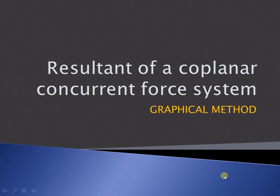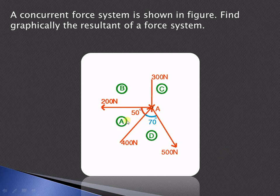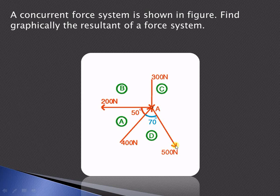Let us understand how to find out the resultant of a coplanar concurrent force system using the graphical method. Here we have a concurrent force system and we have to find out the resultant. We are having various forces: a 200 newton pull force, a 300 newton push force, a 500 newton pull force, and a 400 newton push force.